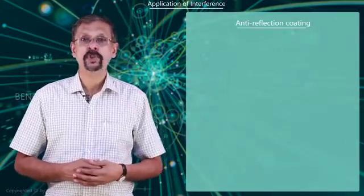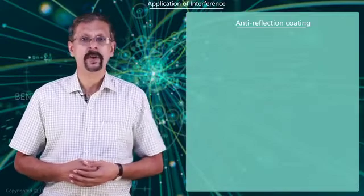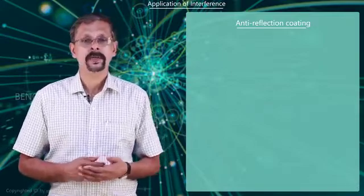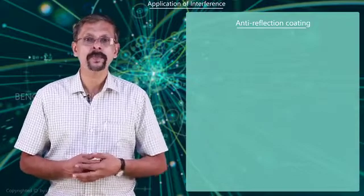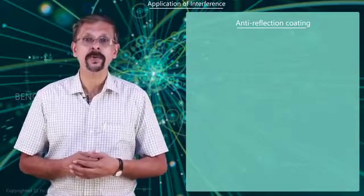In optical instruments like microscopes or telescopes, as the objects are observed, the light coming from the objects falls on the objective lens.